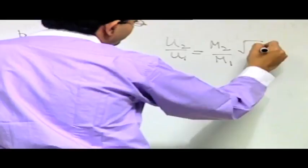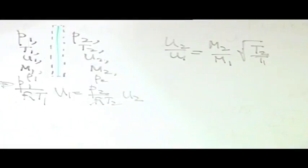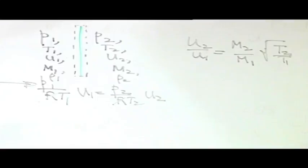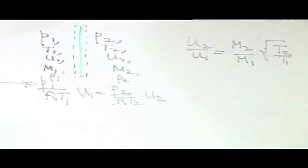We can express U2/U1 in terms of Mach number and temperature: U2/U1 = (M2/M1)·√(T2/T1), since U = M·c and c = √(γRT). It is important to understand that we use isentropic considerations separately in the upstream and downstream of the shock, but between upstream and downstream the flow is not isentropic.